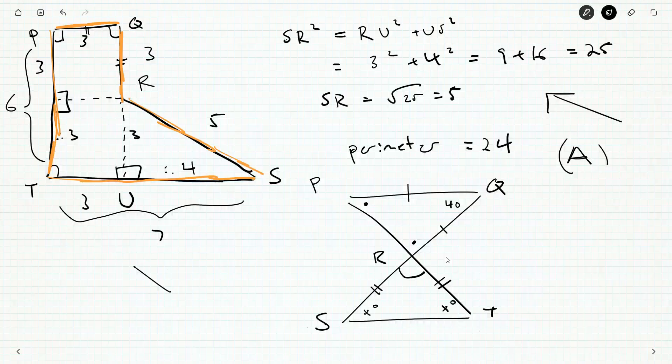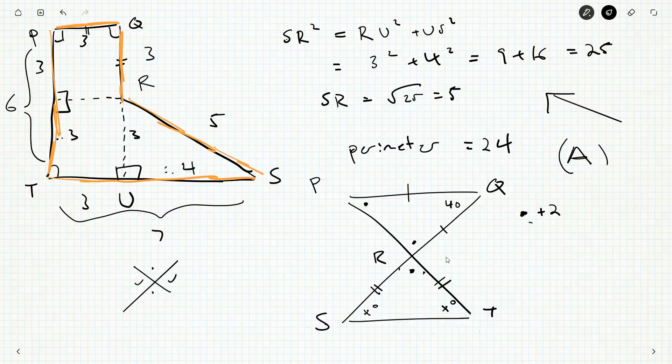Well, opposite angles when two lines cross are the same. So we do know this angle. He's dot. So what can we see?